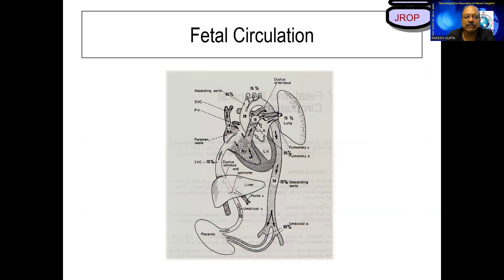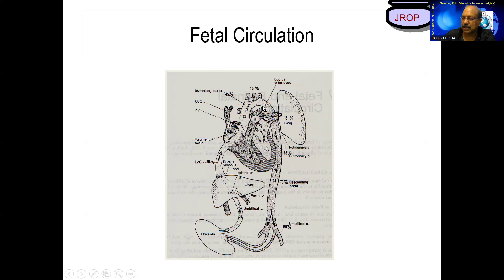The most important thing about fetal circulation: during fetal life we have a placenta which is the site of oxygen exchange. Unpurified blood comes from the umbilical artery to the placenta, gets purified, and is carried by umbilical veins through the ductus venosus into the right atrium, which is diverted to the left atrium by the foramen ovale. Blood going to the right atrium goes to the right ventricle, then to the pulmonary artery, and through the ductus arteriosus goes to the descending aorta. So we have shunts at three different levels: ductus venosus, foramen ovale, and ductus arteriosus.